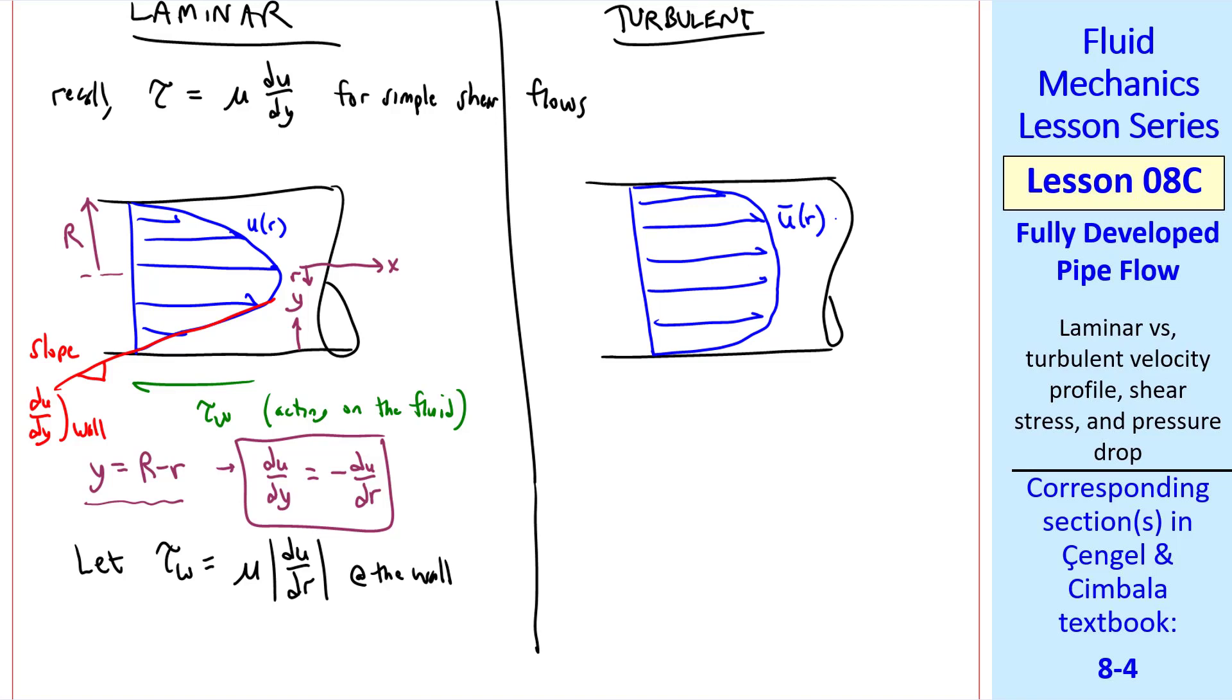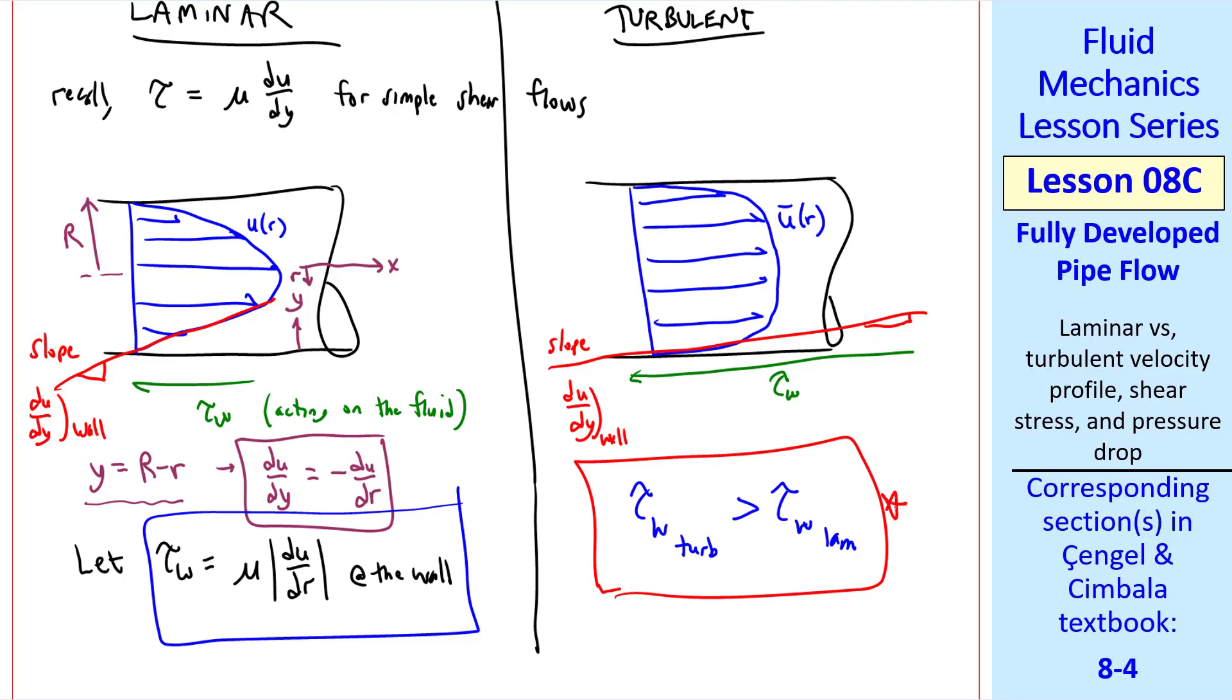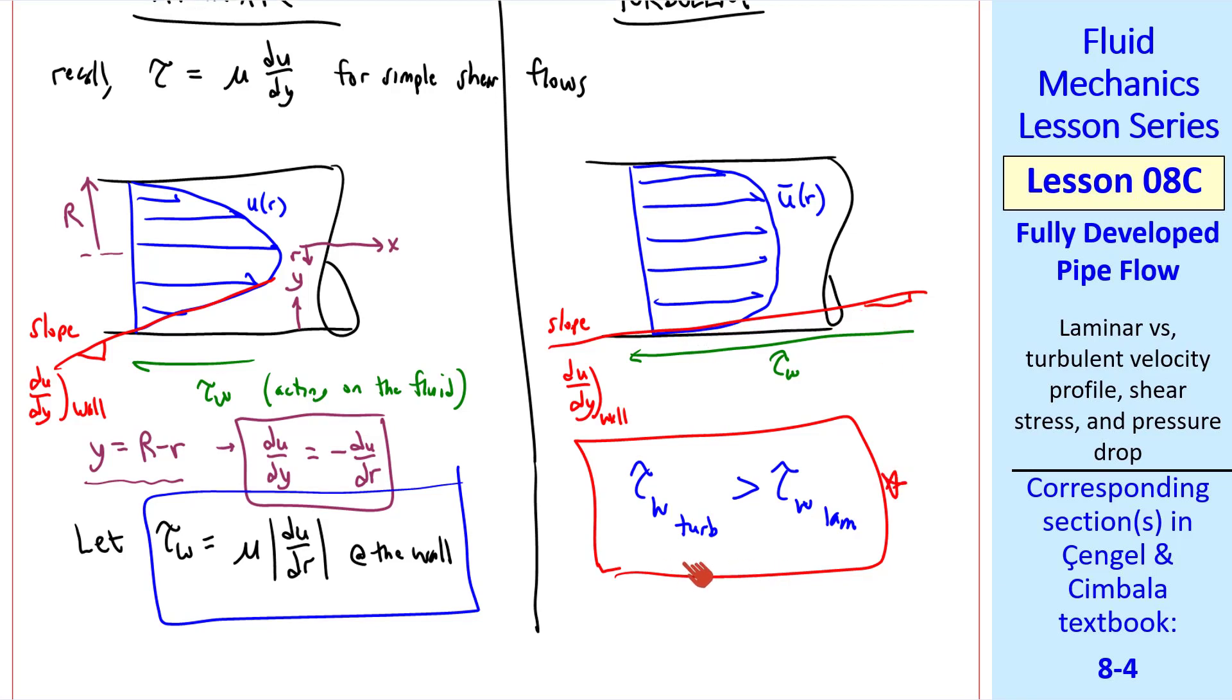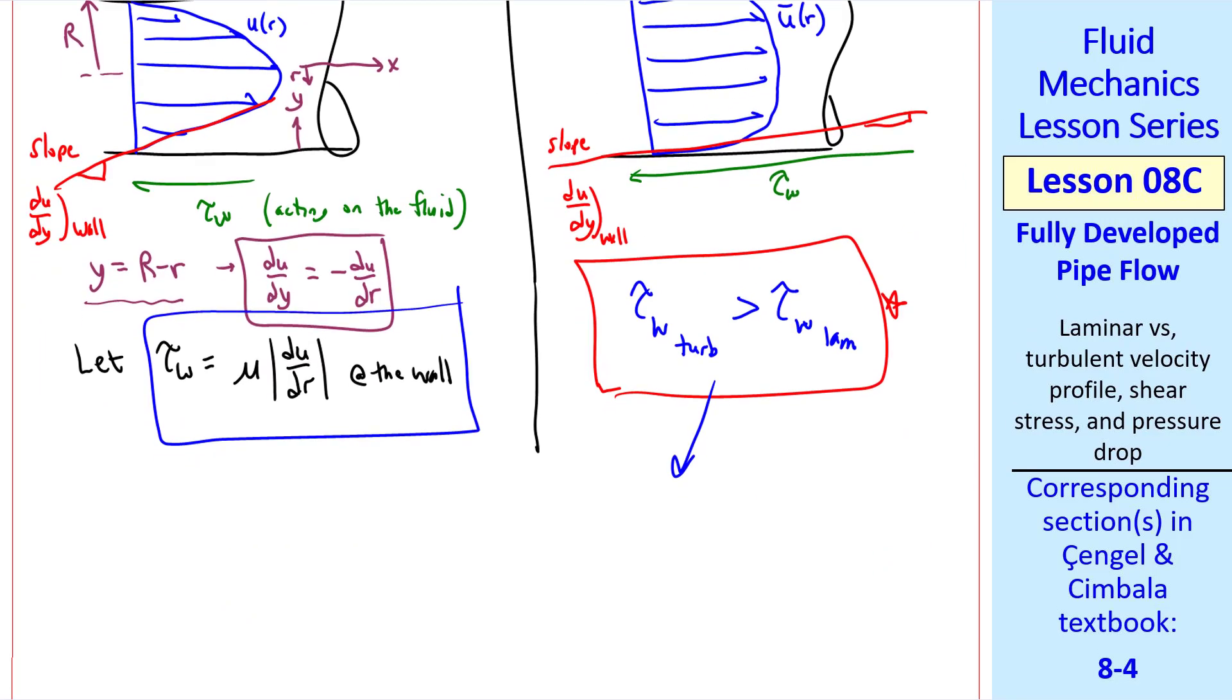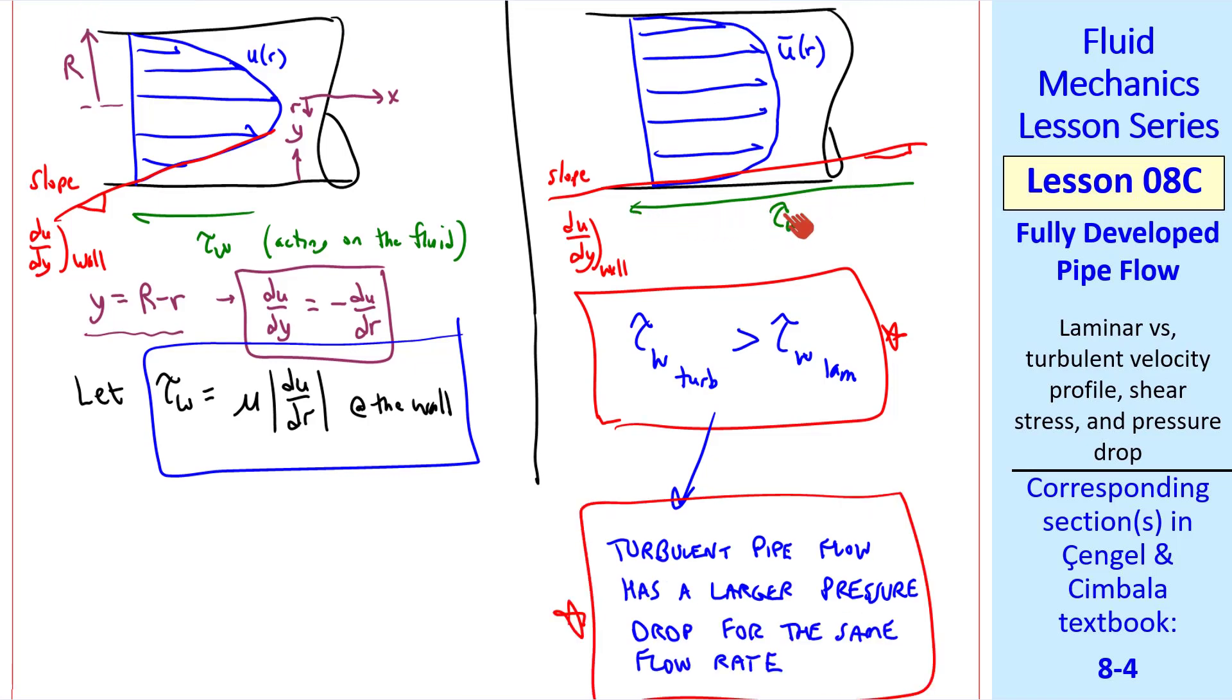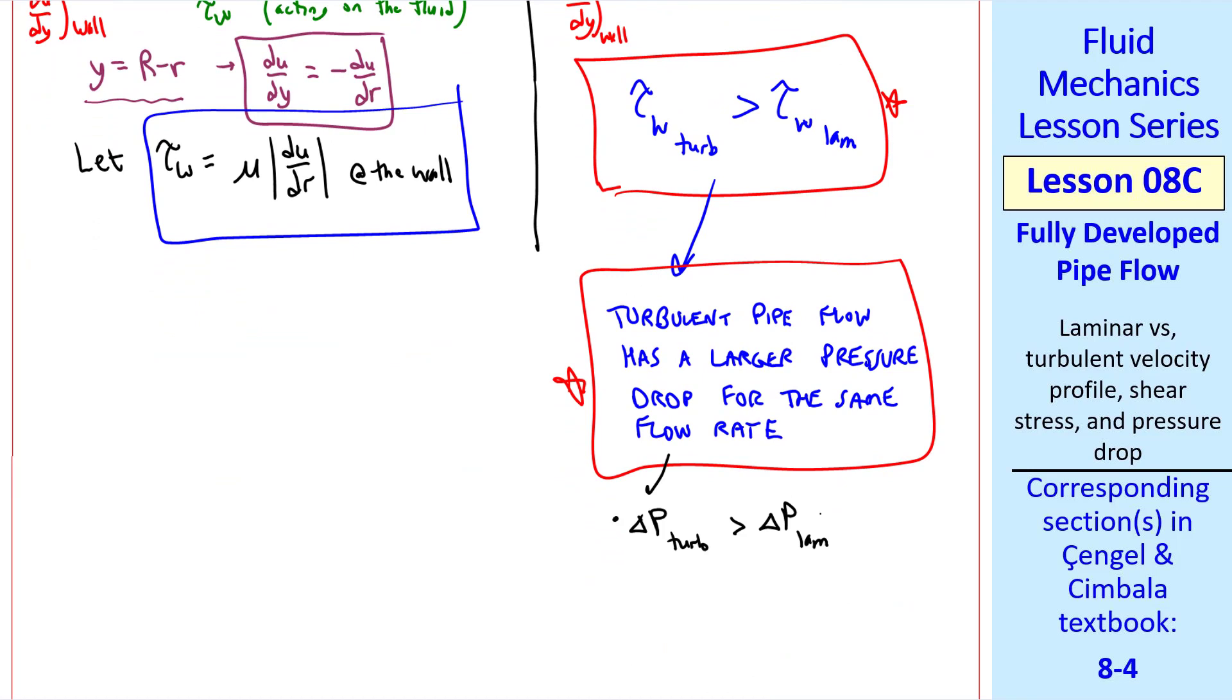Tau w is proportional to the slope du dy at the wall. We do the same with turbulent flow, drawing the mean velocity profile. And notice that the slope du dy is much bigger at the wall. In other words, speed u increases rapidly with distance y from the wall compared to the more slow increase for the laminar case. So tau w is much bigger. Tau w turbulent is greater than tau w laminar because of the steeper slope at the wall. How much bigger? In some cases, about a factor of three if you have the same conditions except laminar versus turbulent flow. The practical implication of this is that turbulent pipe flow has a larger pressure drop for the same flow rate. Physically, since we have a larger shear stress, we have more friction and you have to push the fluid harder to get it to have the same flow rate compared to the laminar case. So because of this, the pressure drop for turbulent flow is greater, and also the irreversible head loss is greater for turbulent flow than for laminar flow.